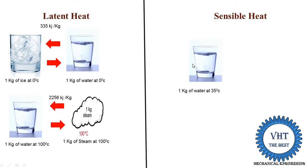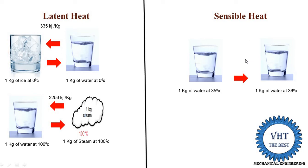For example, there is 1 kg of water in a glass at 35 degrees centigrade, and we supply some quantity of heat. The temperature increases to 36 degrees centigrade, but the phase is not changed — it is liquid at 35°C and it remains liquid at 36°C. Similarly, the opposite process: 1 kg of water at 36°C absorbs some heat and cools to 1 kg of water at 35°C. The phase does not change.